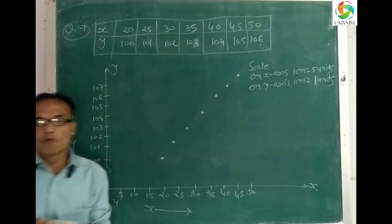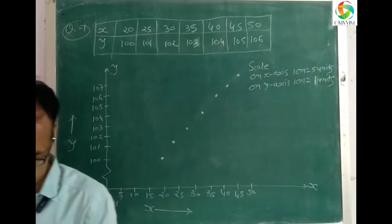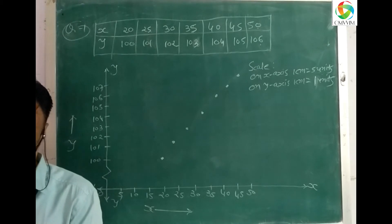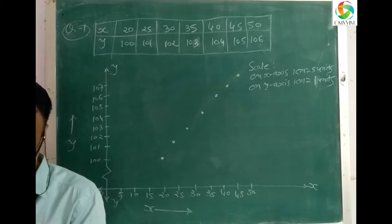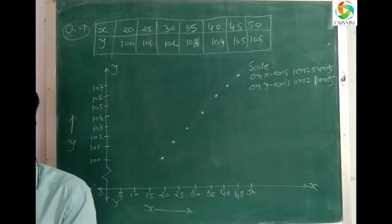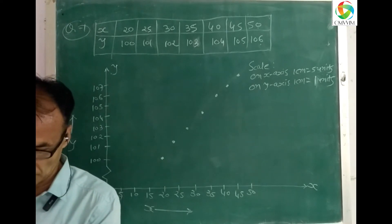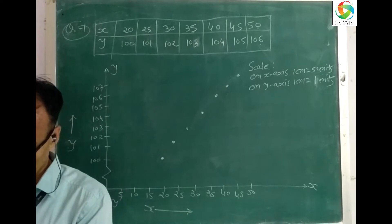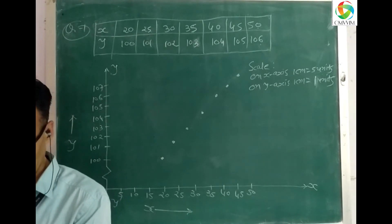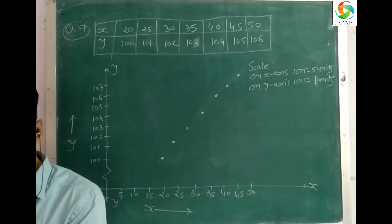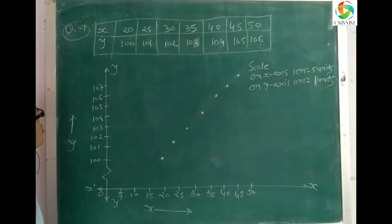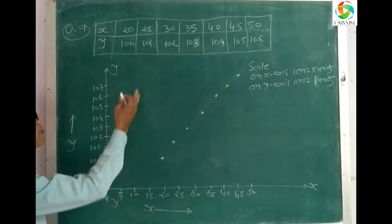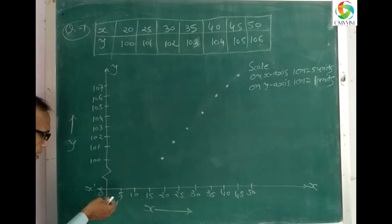One question will be solved in the data diagram. We are on page number 60, question number 3, Apti book 3. Draw a data diagram for the given data and state the type of correlation.